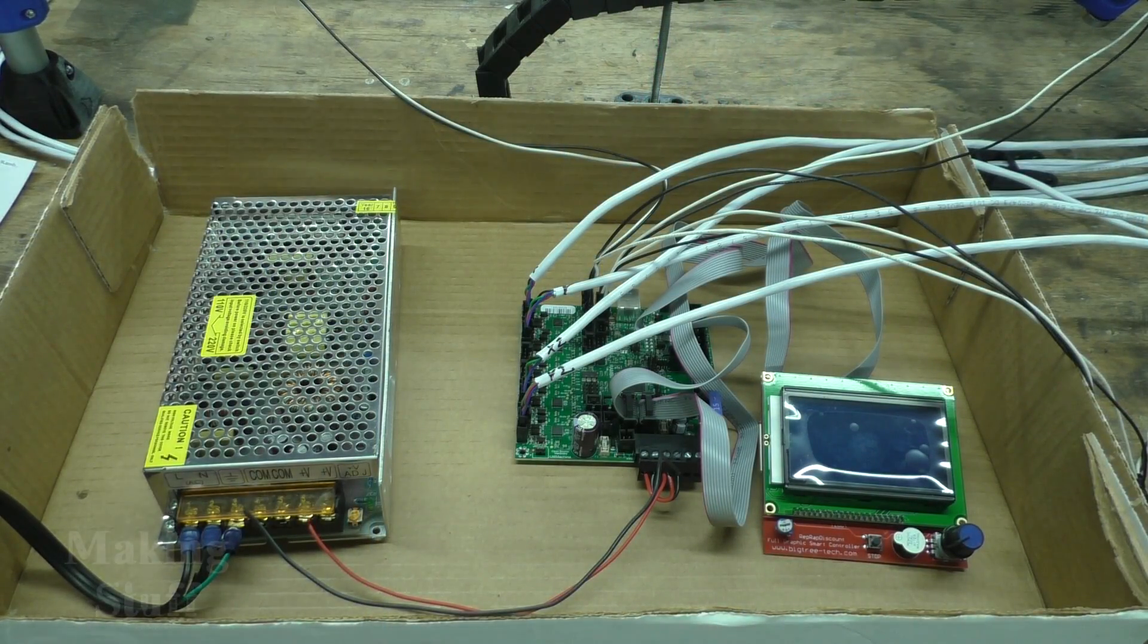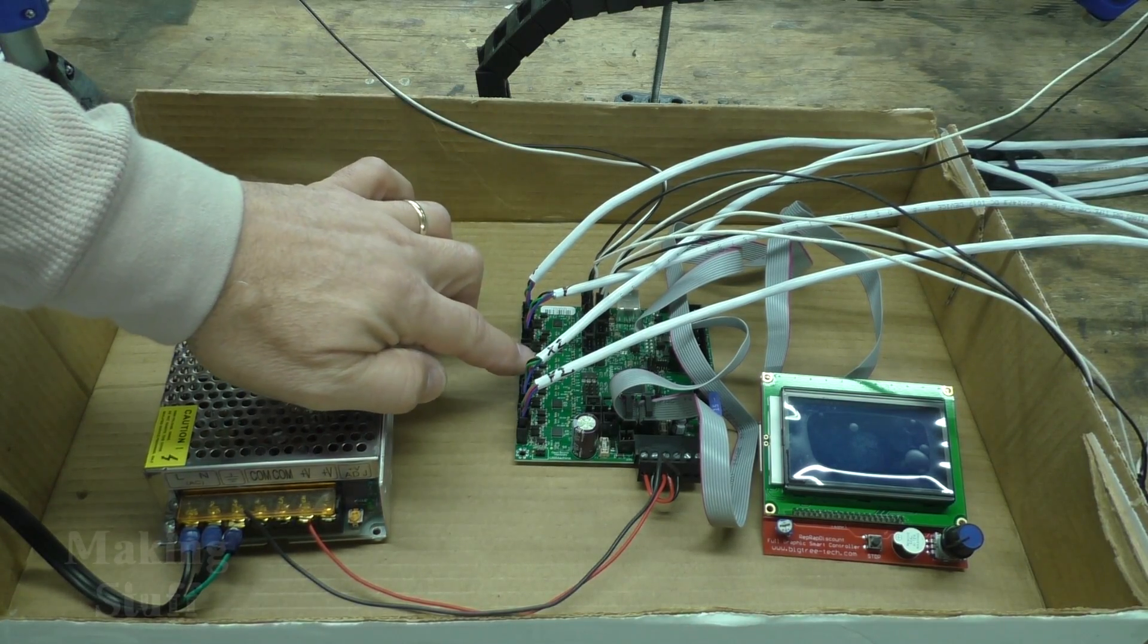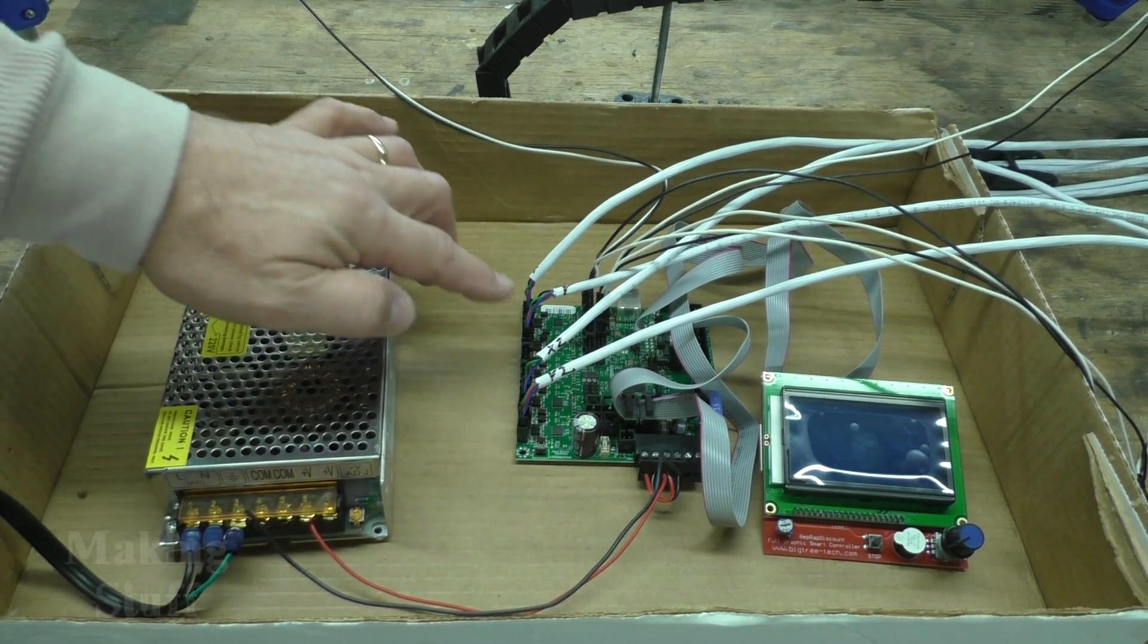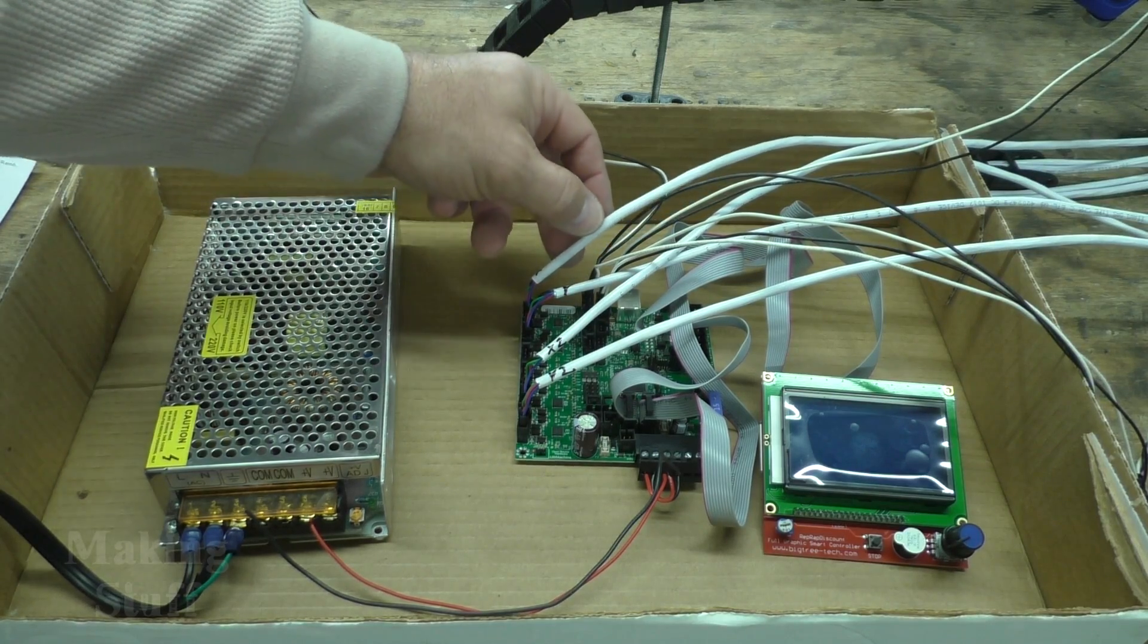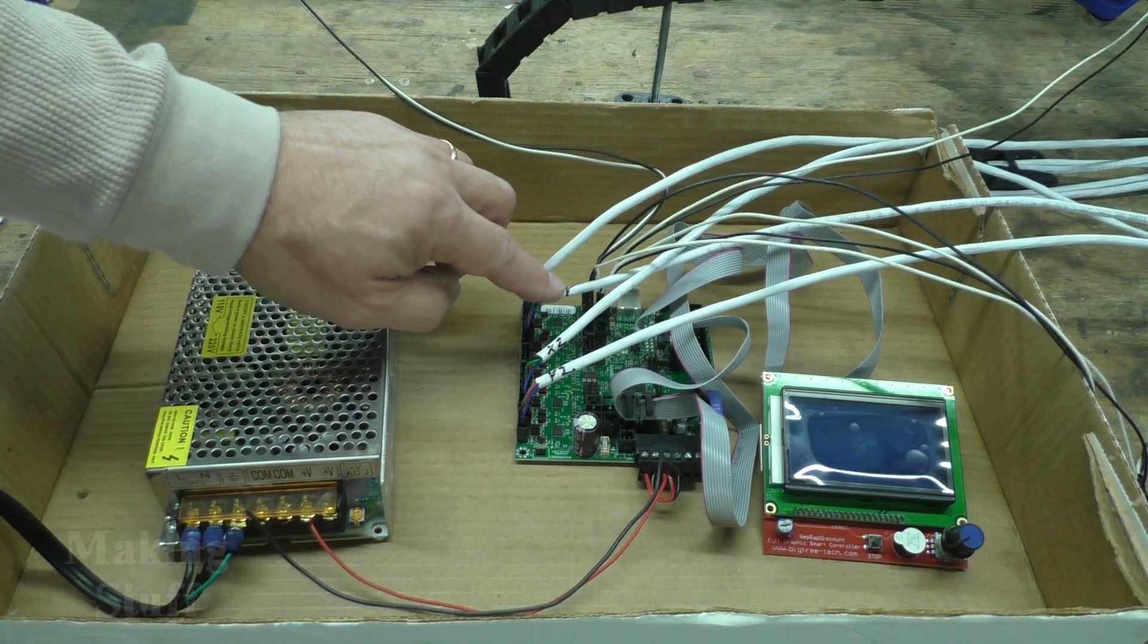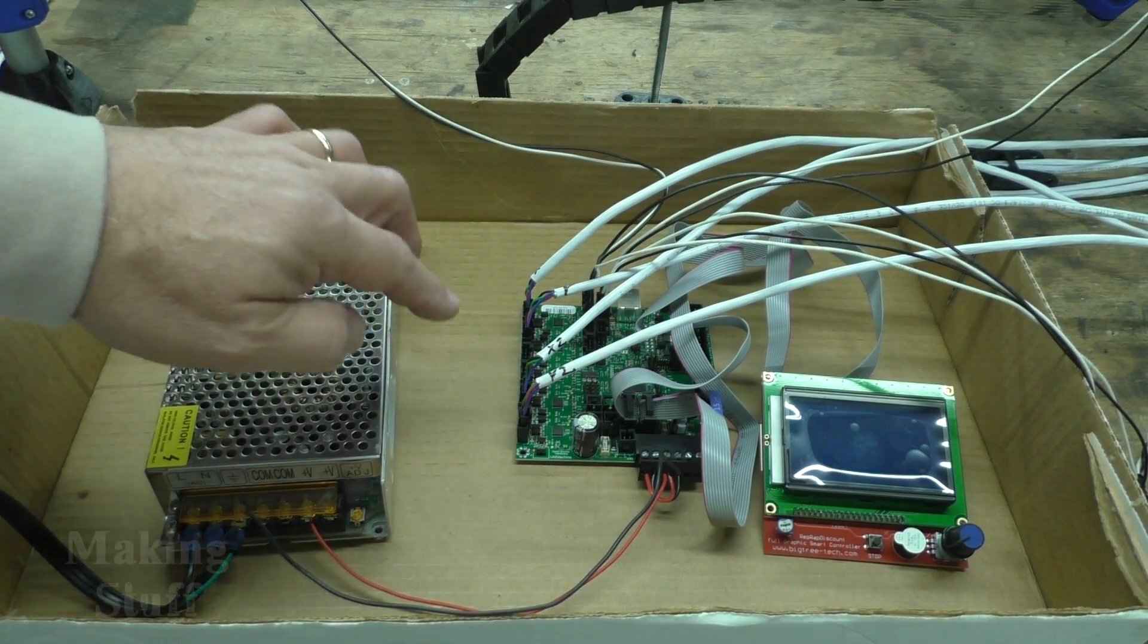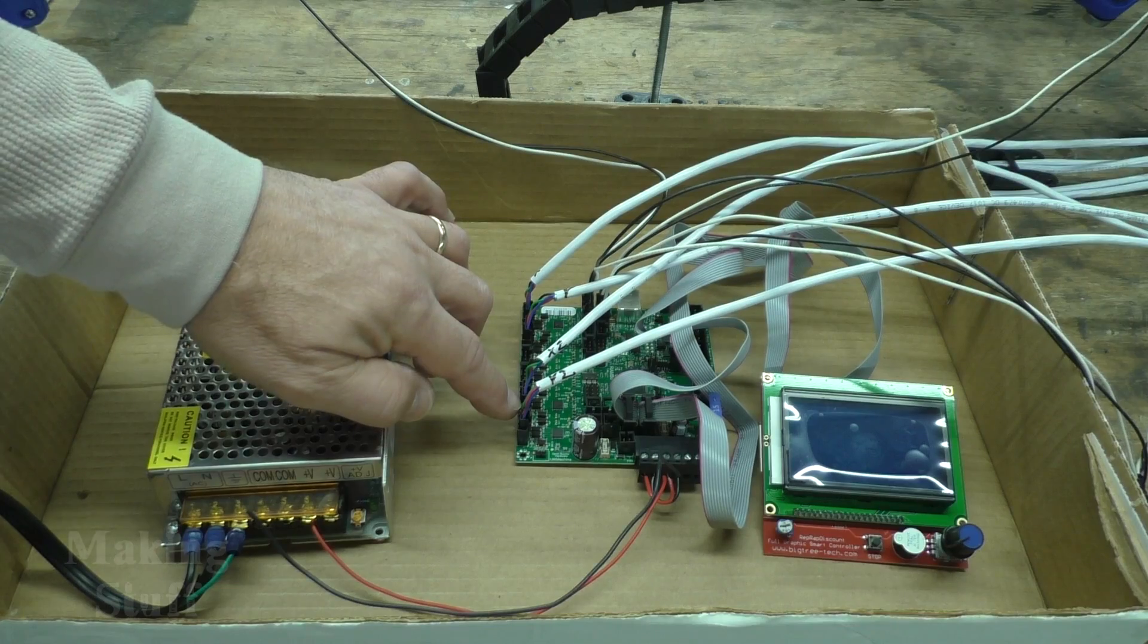I have gone ahead and wired this up off camera because I know how exciting it is to watch somebody wire something. I've got it all wired up and I'm using a Rambo 1.4 board to power this. I've got the stepper motors hooked up, there's two motors for each axis, so I've got X and Y in the X and Y slot and then there's also a second motor for each axis and those are wired into the E0 and the E1 slot.